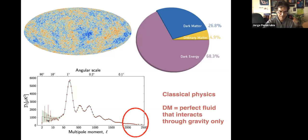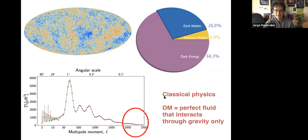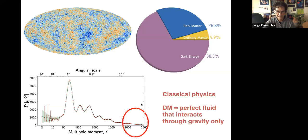The lambda CDM model is a classical model in the sense that it uses classical physics. There is no exotic physics, no new physics in our paradigm. Dark matter behaves as a perfect fluid which only interacts through gravity. We really see no deviation from this classical picture, all the way down to very high moments of the cosmic microwave background. With the data at hand, we have no evidence that dark matter is a particle — in principle, it behaves as a fluid.